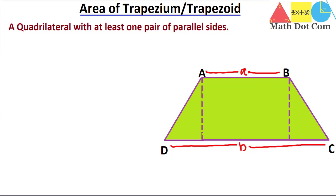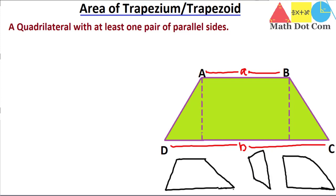Other than the standard shape, shapes that look different can also be a trapezium as long as two sides are parallel and two are non-parallel. This is not the only shape of a trapezium — it can vary. Another important property: if we sum up all the angles of a trapezium, it must equal 360 degrees. So the sum of angles must be equal to 360 degrees.